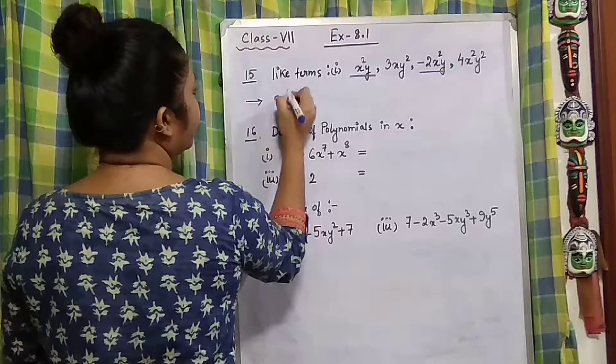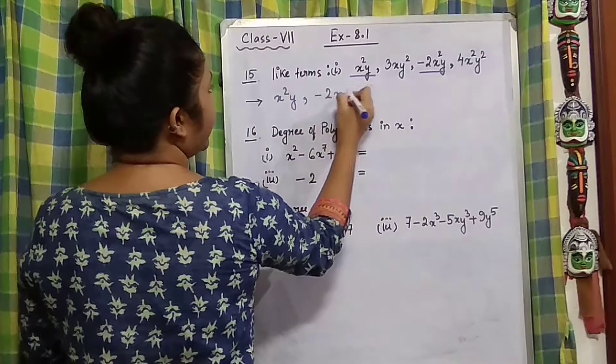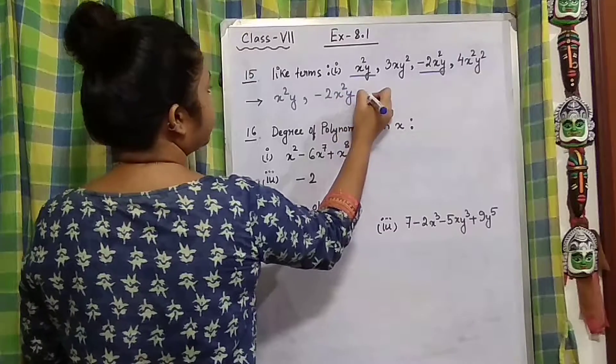So here we are going to write it down: x²y and -2x²y.